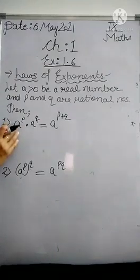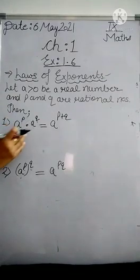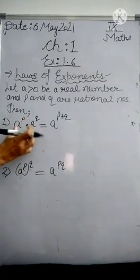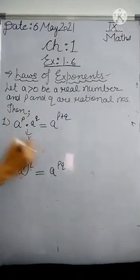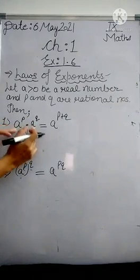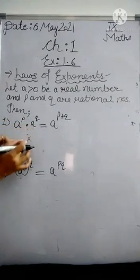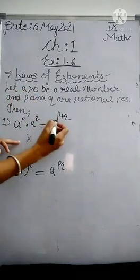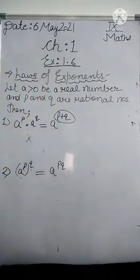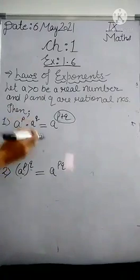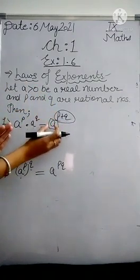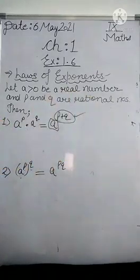First law is that if I have a number a power p and same number a with different power q, and these numbers have multiplication operator between them, then if we have two numbers with same base, the result will be addition of the powers. When we have same base and different powers, we write the base once and add the powers together.